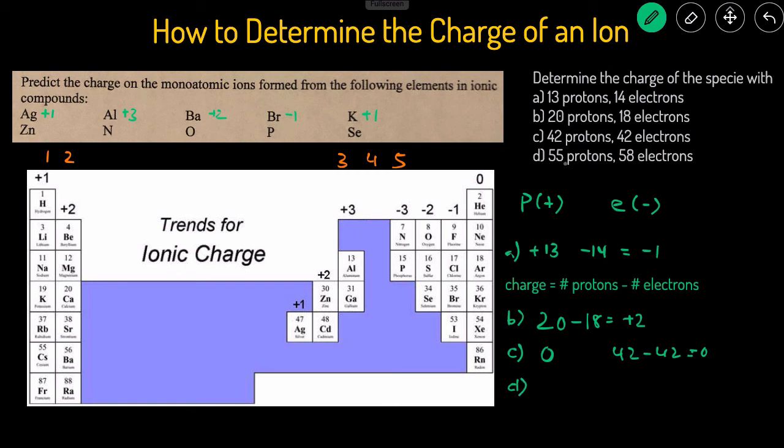And then lastly for D, 55 protons, 58 electrons. We have more electrons than protons, so more negatively charged than positively charged. So overall, it's going to be negative. It'll be 55 minus 58 equals a negative 3 charge.